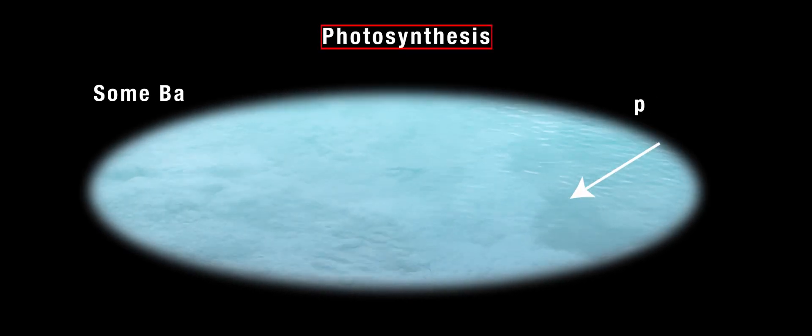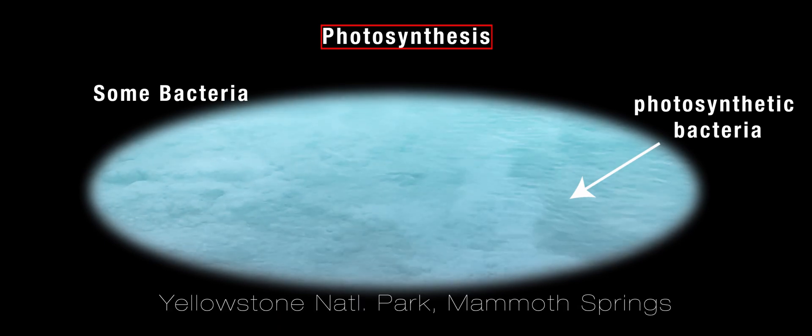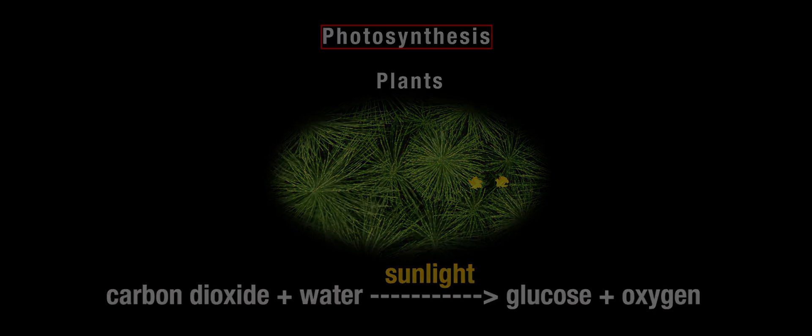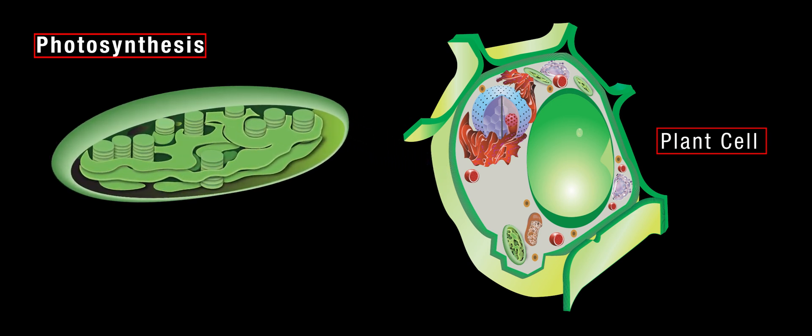Photosynthesis is a process through which some bacteria, plant-like protists, and plants use sunlight to combine carbon dioxide and water to form glucose and oxygen. In plant cells, photosynthesis takes place in a double membrane organelle called chloroplast.